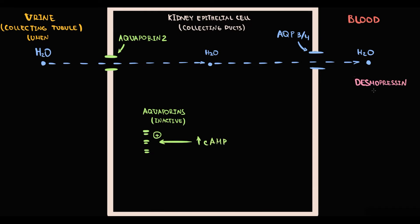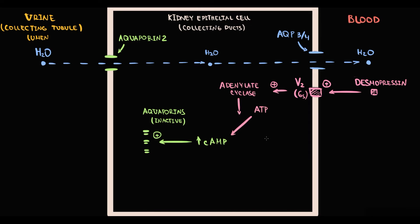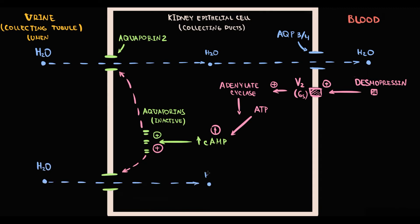So when we prescribe desmopressin, it will activate the V2 receptor. V2 receptor is Gs-coupled, so in response to activation it will stimulate adenylate cyclase to convert ATP into cyclic AMP. This will cause increasing cyclic AMP levels inside the cell. The higher the cyclic AMP concentration, the more aquaporin molecules will be transported to the surface of the epithelial cell, and with increasing amounts of aquaporin molecules on the epithelial surface, water absorption increases.